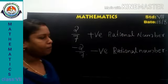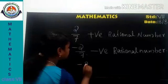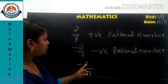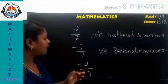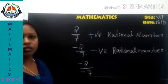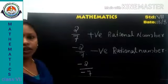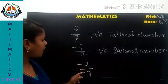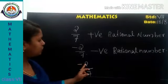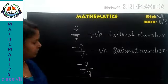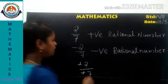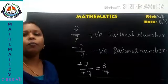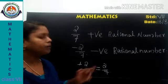We can take one more example: negative 2 by negative 7. Here both the numerator and denominator are negative. If there is anything common in the numerator and denominator we can cancel it. The negative signs are common, so negative and negative cancel out, and it becomes 2 by 7. So if both numerator and denominator are negative, the rational number will be positive.